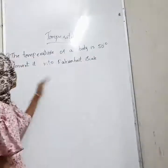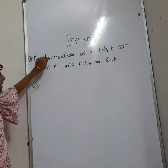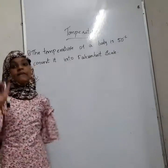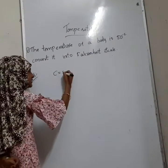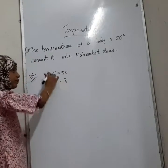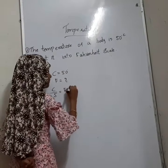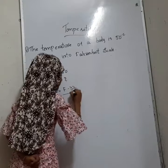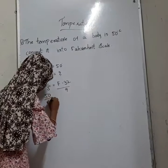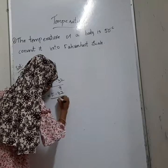Now I am going to solve a problem. The question is: the temperature of a body is 50 degrees Celsius — convert it to Fahrenheit. We know that C is equal to 50 degrees. The formula is: C by 5 is equal to F minus 32 by 9. So substituting, 50 by 5 is equal to F minus 32 by 9.